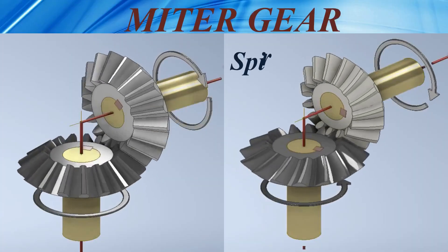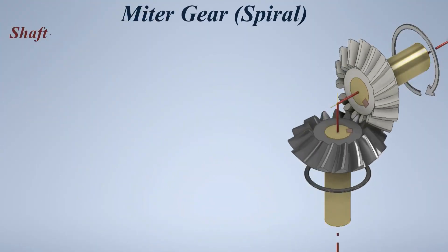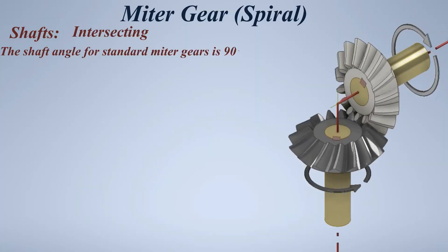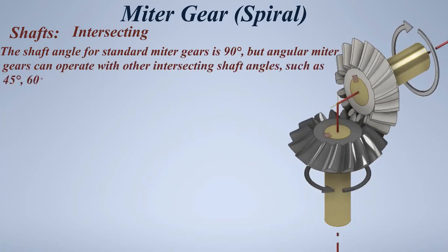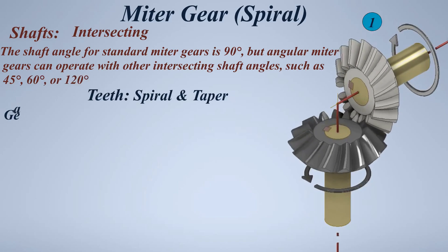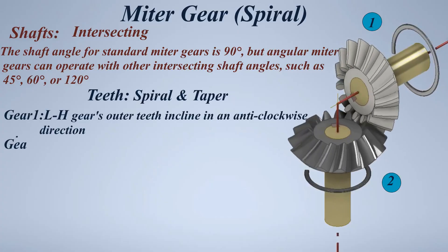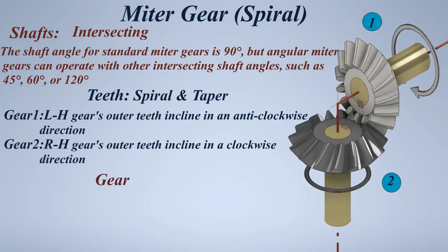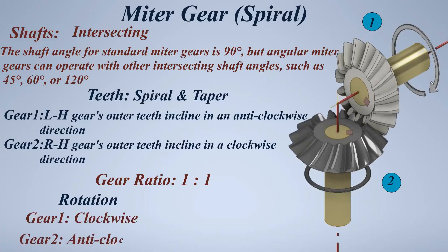Miter gear — Spiral and Straight variants. Shafts: intersecting. The shaft angle for standard miter gears is 90 degrees, but angular miter gears can operate with other intersecting shaft angles, such as 45 degrees, 60 degrees, or 120 degrees. Teeth: spiral and taper. Gear 1: left hand — outer teeth incline in an anticlockwise direction. Gear 2: right hand — outer teeth incline in a clockwise direction. Gear ratio: 1 to 1. Rotation — Gear 1: clockwise, Gear 2: anticlockwise.